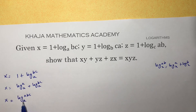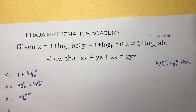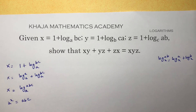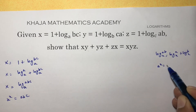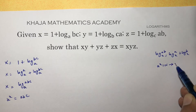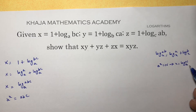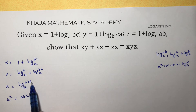Now converting this logarithmic form to exponential form: according to the definition, if A^x equals N, then x is log N to the base A. So A^x equals N is the exponential form. Here, A^x equals ABC.